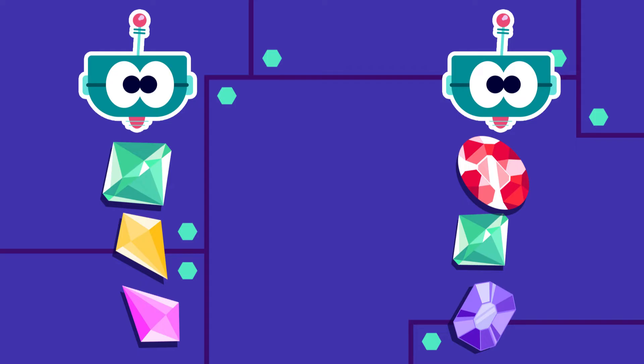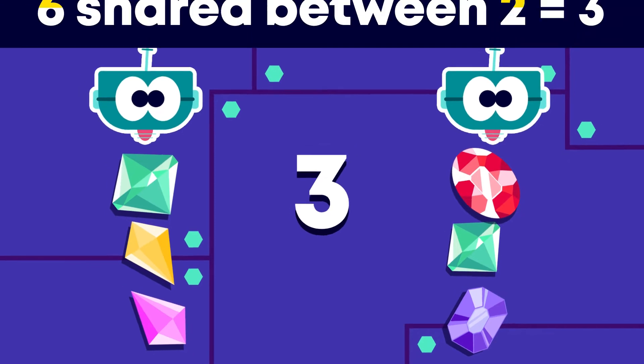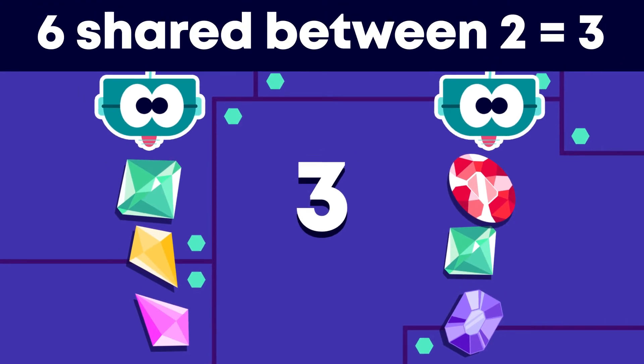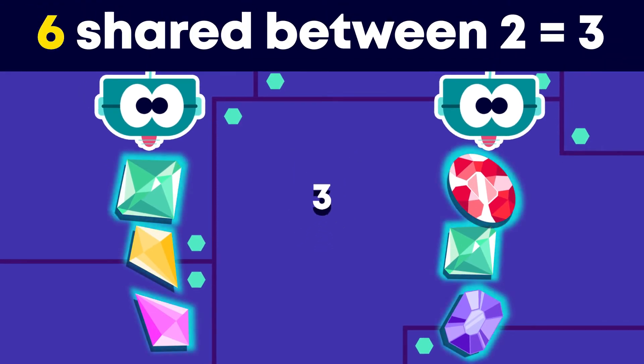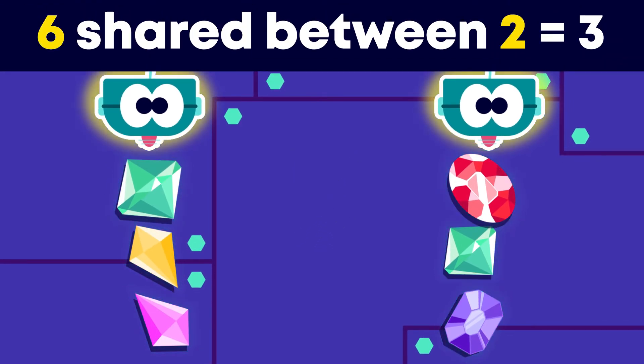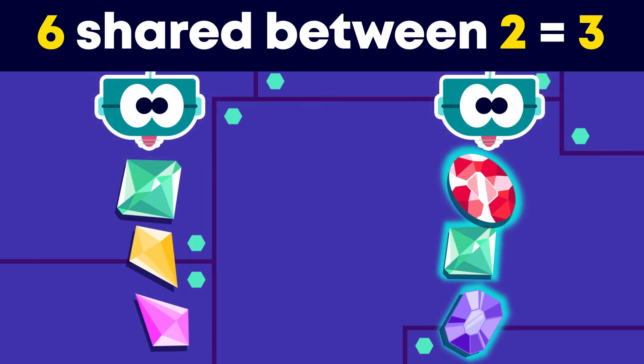How many crystals did each snowbot get? 3. Well done. 6 shared between 2 equals 3.